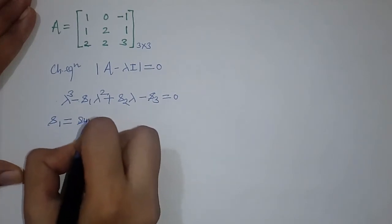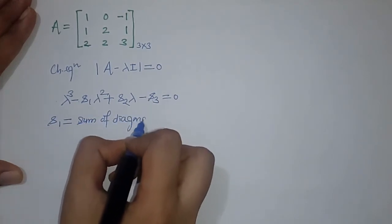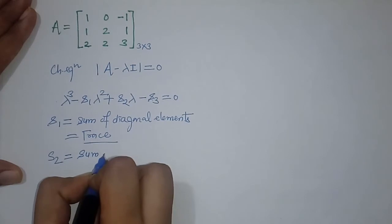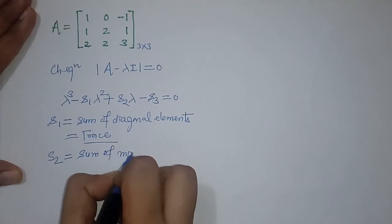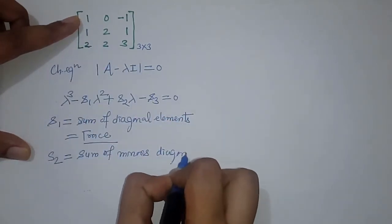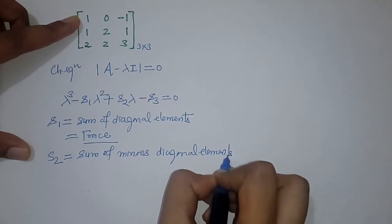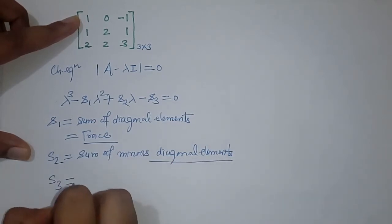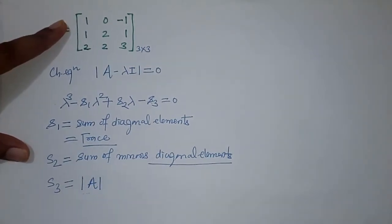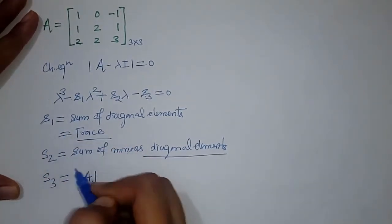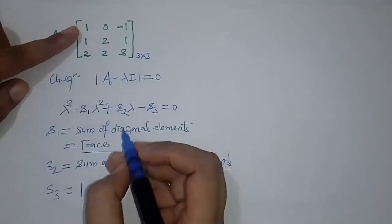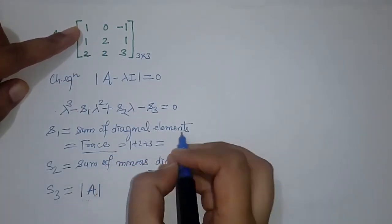S1 is the sum of the diagonal elements. S2 is the sum of minors of the diagonal elements. S3 is the determinant of matrix A. Starting with S1: the diagonal elements are 1, 2, and 3, so S1 equals 6.